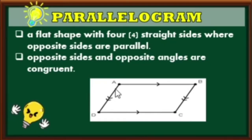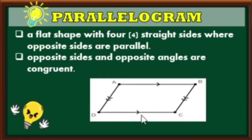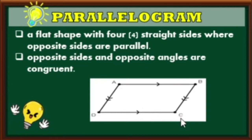We have quadrilateral ABCD. AB is parallel to DC and also congruent. Line segment AD is parallel to line segment BC and they are also congruent. Therefore, quadrilateral ABCD is a parallelogram.